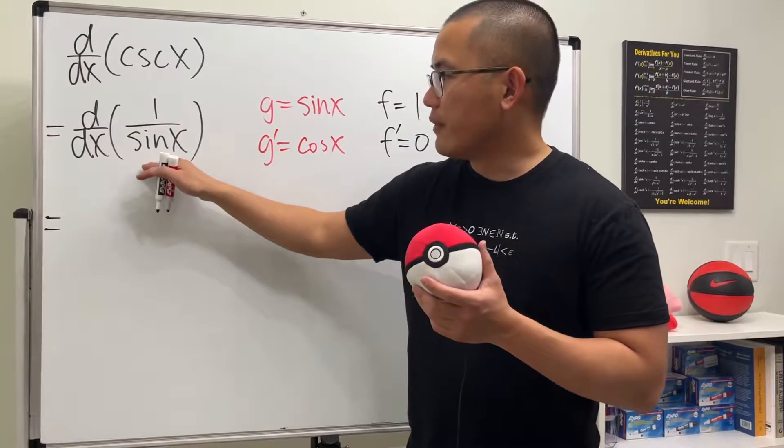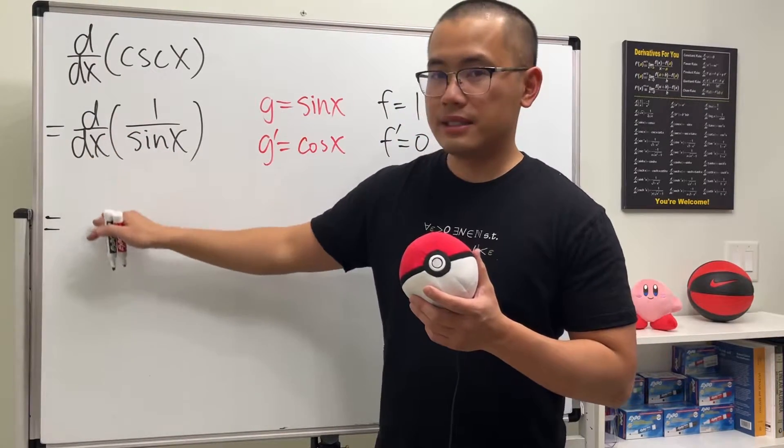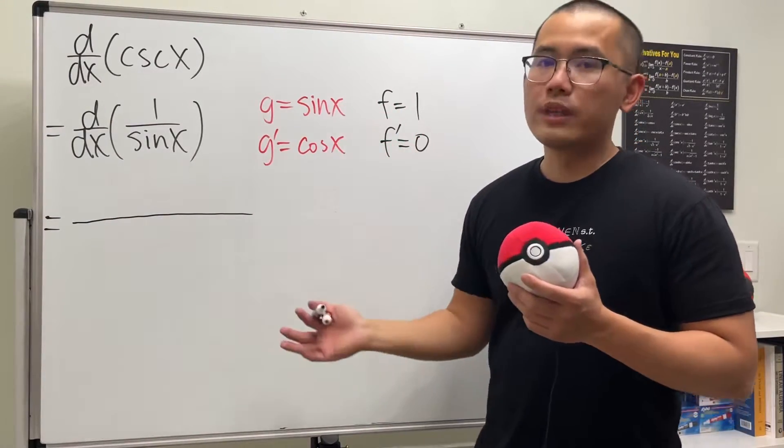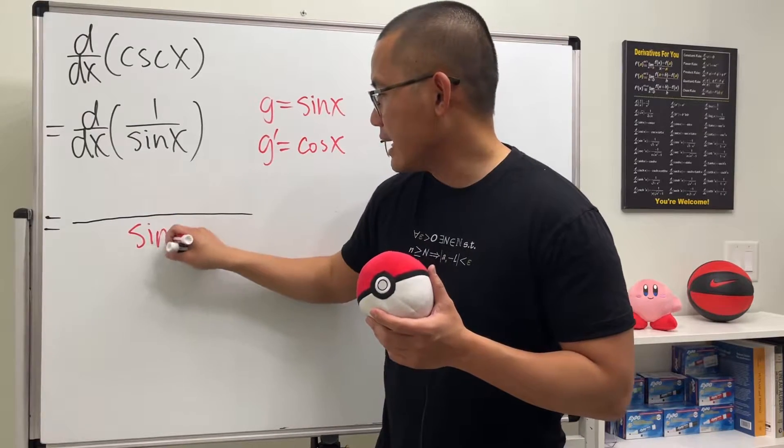To take the derivative of this, there's no more d/dx symbol, we'll just get the result. So let's go ahead and put down a fraction bar, and then we square the bottom, which means we have to square sine x.